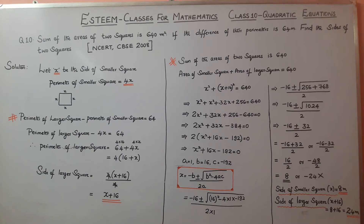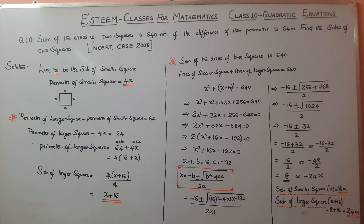Perimeter of larger square is 4 times the side of the larger square. From the difference equation: 4 times the side of the larger square minus 4x equals 64. Dividing by 4, the side of the larger square equals x plus 16.